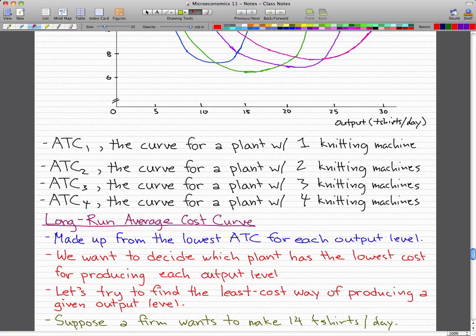And the long-run average cost curve is actually made up from the lowest average total cost for each output level. We want to decide which plant has the lowest cost for producing at each output level. So let's try to find the least cost way of producing a given output level.